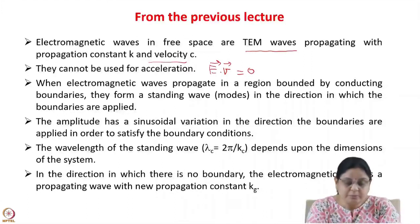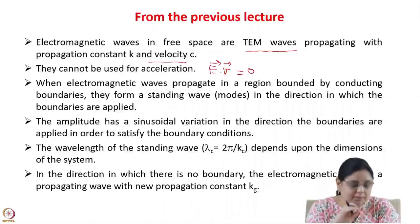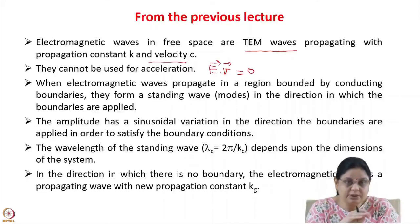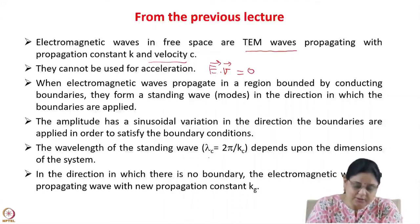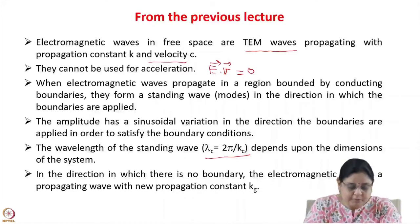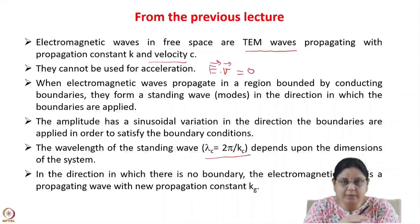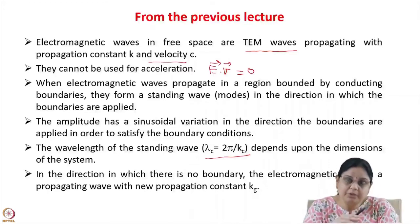When electromagnetic waves propagate in regions bounded by conducting boundaries, they form standing waves known as modes in the directions where the boundaries are applied, with sinusoidal amplitude variation to satisfy boundary conditions. The wavelength of the standing wave depends upon the dimensions of the system — we call this the cutoff wavelength, equal to 2π/kc. In directions with no conducting boundaries, the wave continues to propagate with a new propagation constant kg.